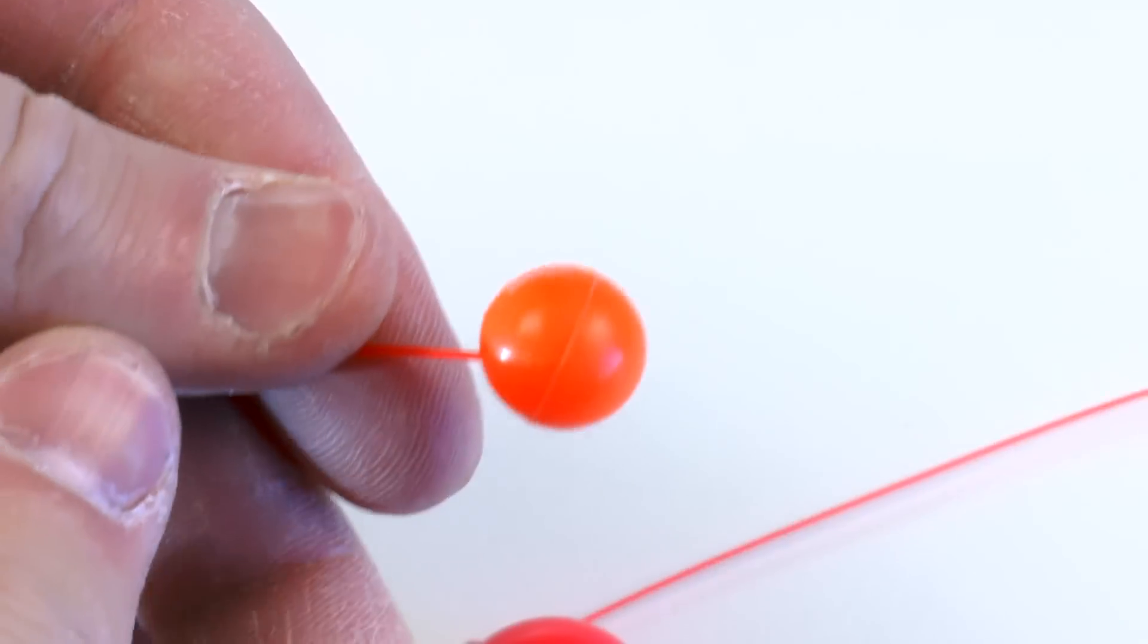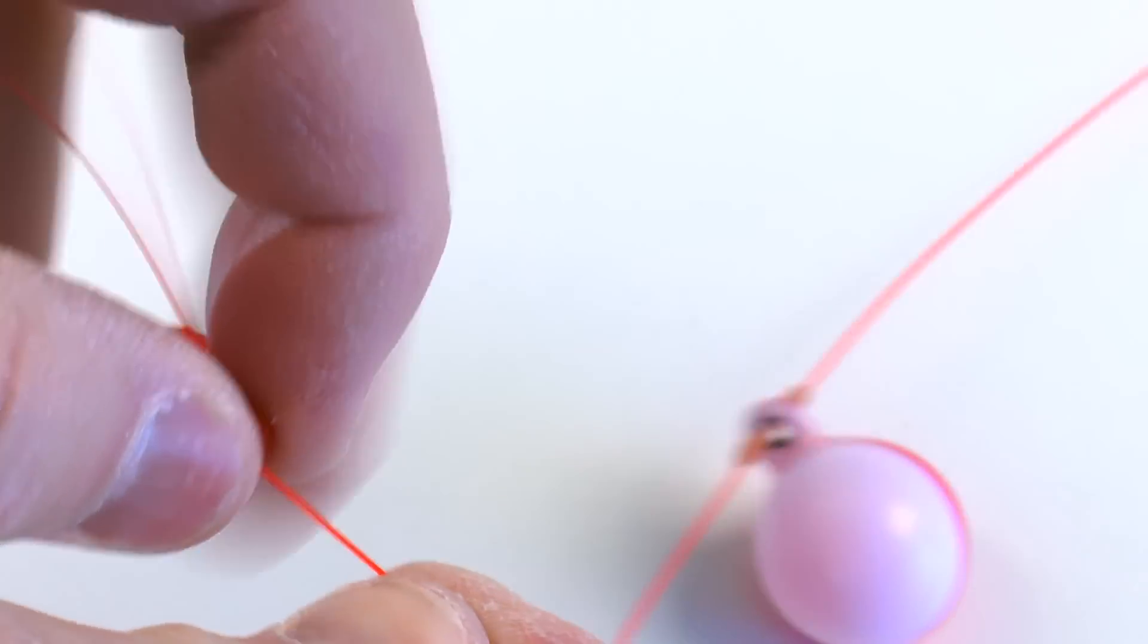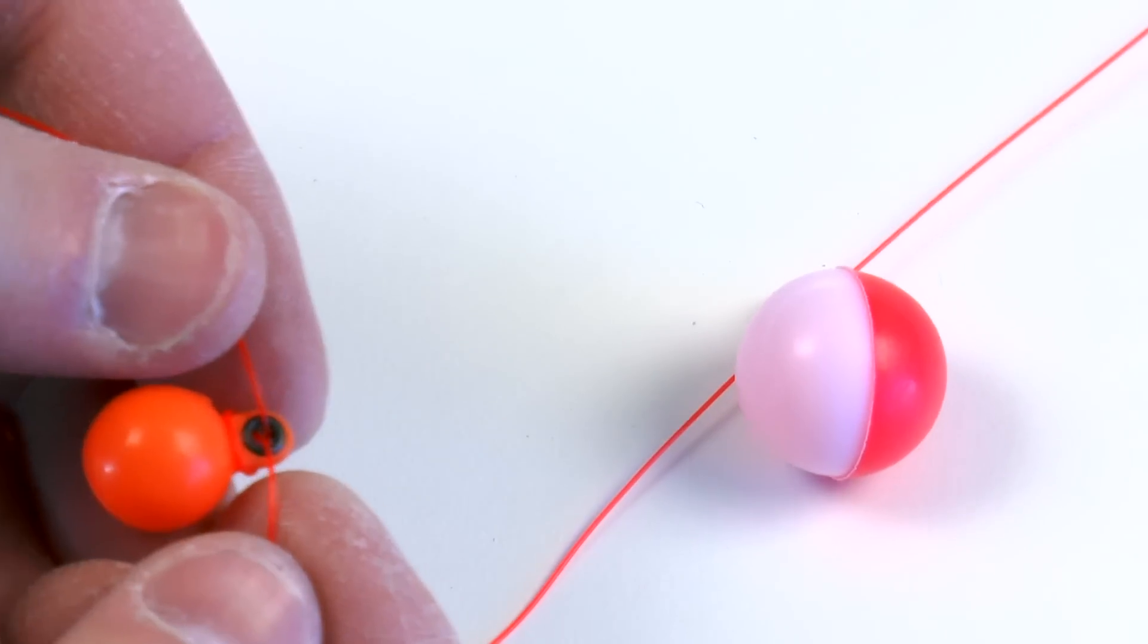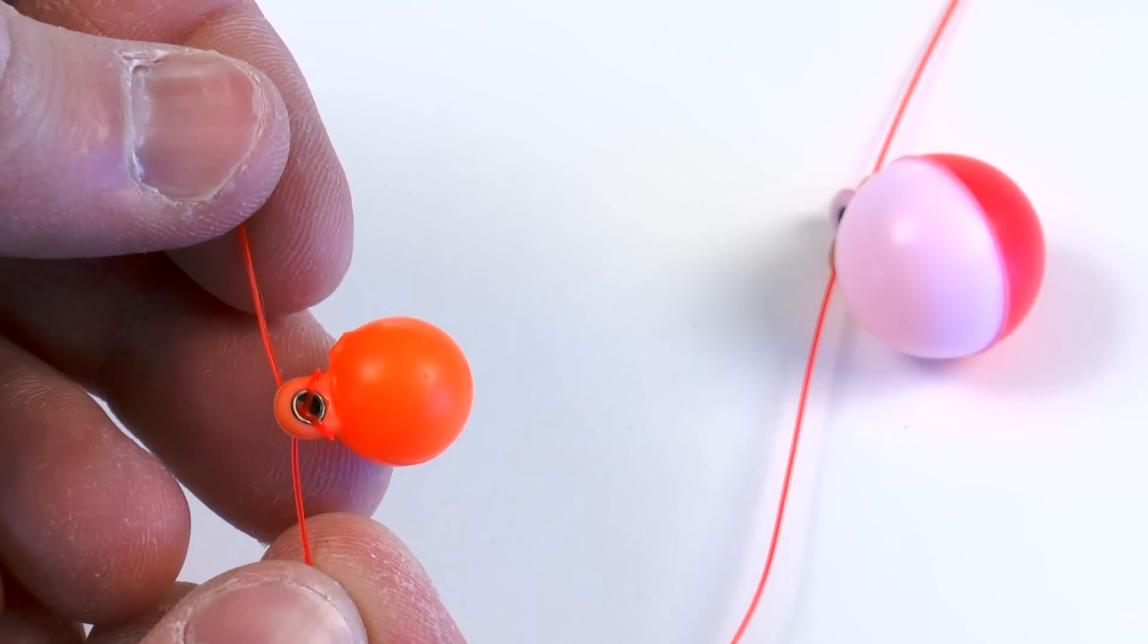Reason being, you have this metal grommet inside of there and as you try to pull this indicator back and forth, it rubs against that grommet, cuts up your line, and really sticks and is difficult the entire way.